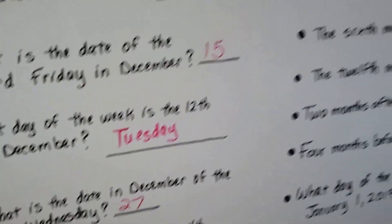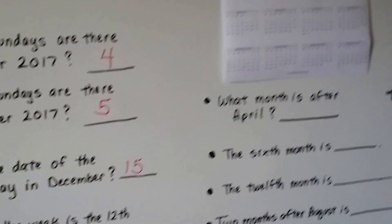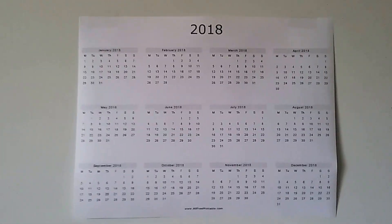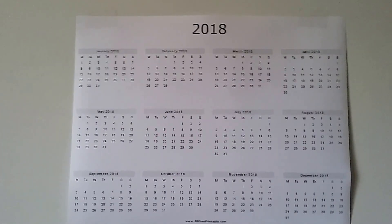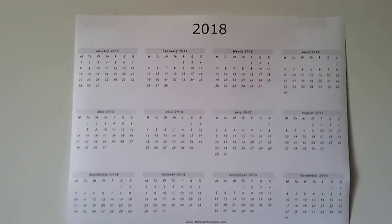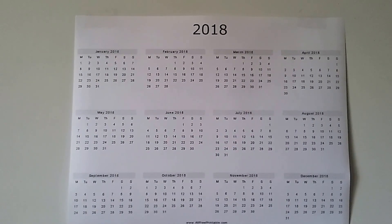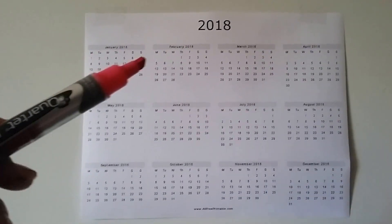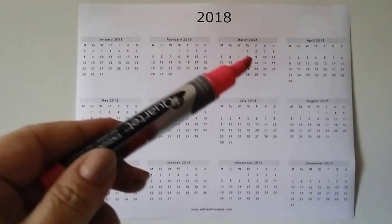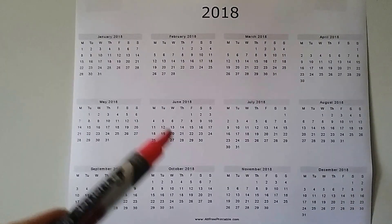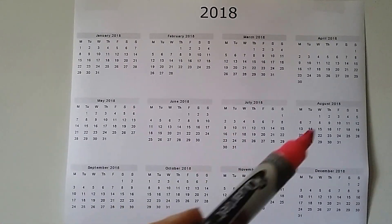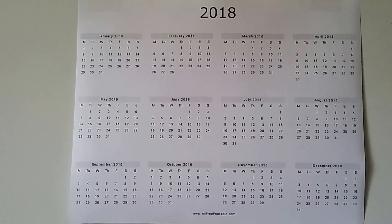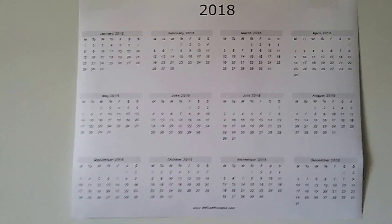Let's see if we can answer these — we've got some critical thinking. Here's a yearly calendar, and see how it's different from the monthly one? This is the entire year of 2018: January, February, March, April, May, June, July, August, September, October, November, December.